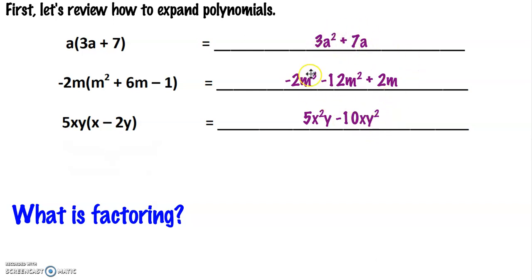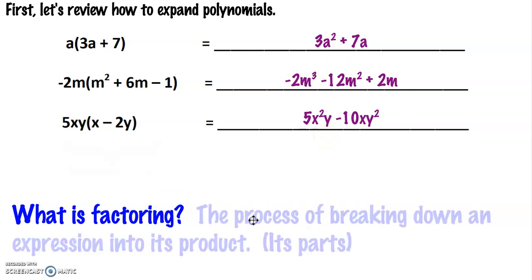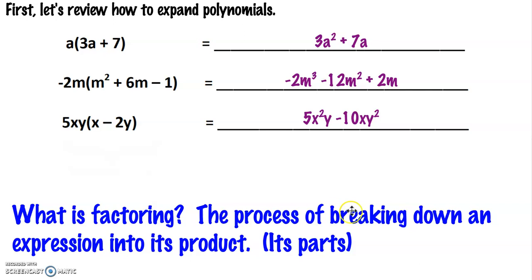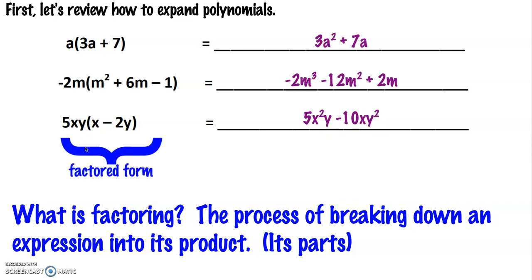This is what it looks like when we multiply those. But this time what we want to do is we want to factor. Factoring is the process of breaking down an expression into its product. So instead of starting with something that we're going to be multiplying together, we're actually going to be starting from this side and working backwards from 5x squared y minus 10xy squared to its factored form, breaking up this expression into its parts — into 5xy and x minus 2y.